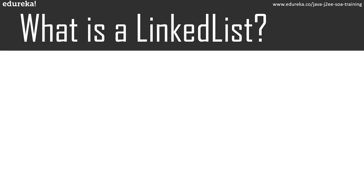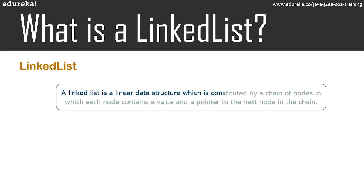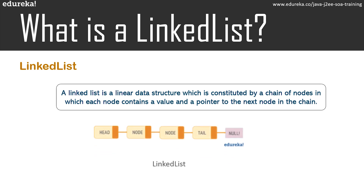A linked list is a linear data structure with a collection of multiple nodes, where each element stores its own data and a pointer to the location of the next element. The last node in the linked list points to null, indicating that it is the end of the chain. An element in the linked list is referred to as a node. The first node is called a head and the last node is called a tail.